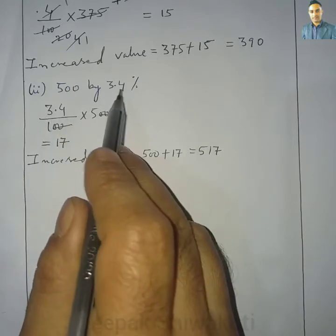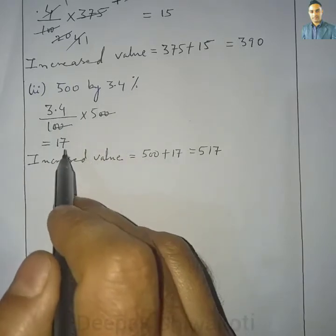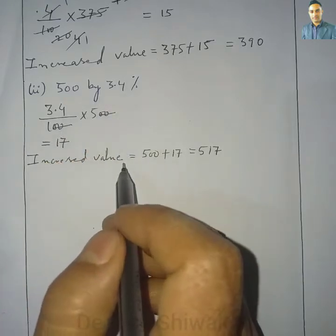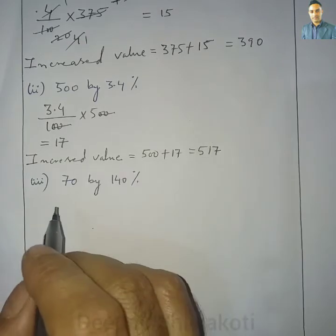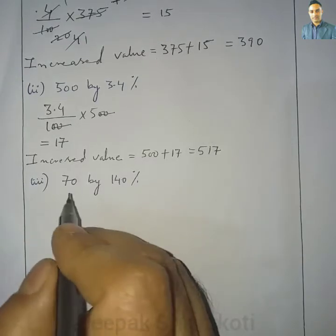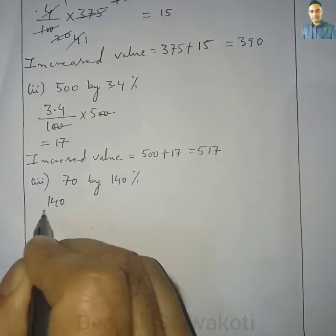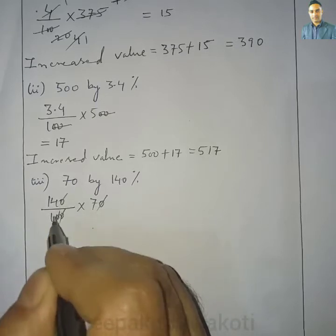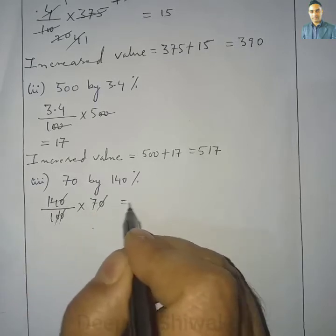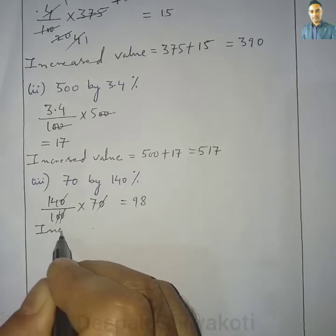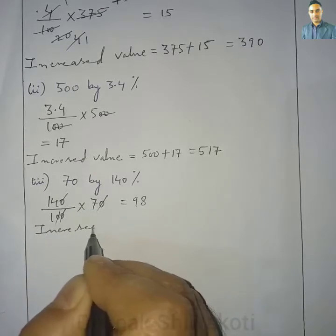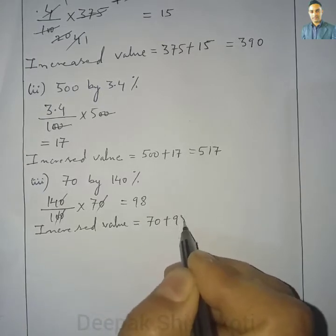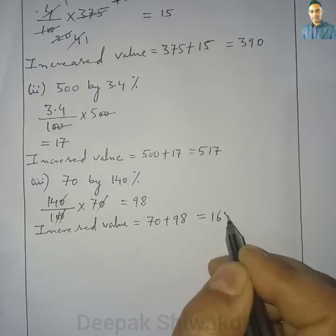Question 1.3: Increase 70 by 140%. We calculate 140% of 70. 7 multiplied by 14 equals 98. The increased value will be equal to 70 plus 98, which equals 168.